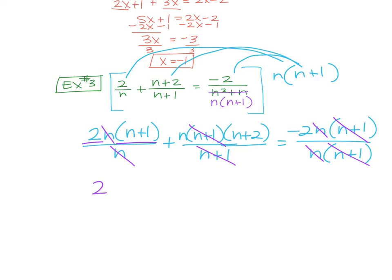So what we're left with is 2 times n plus 1, and you can distribute at this point now. So 2n plus 2 plus n times n plus 2 is plus 2n equals negative 2.